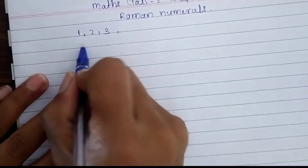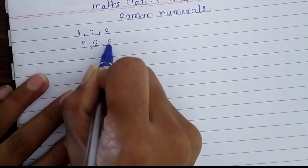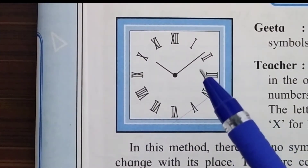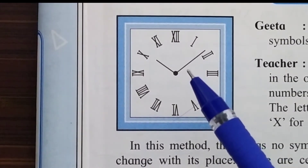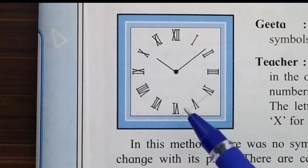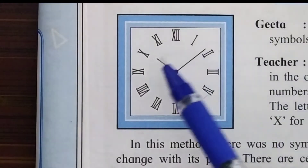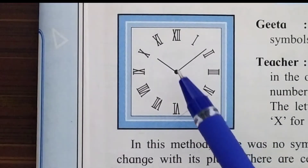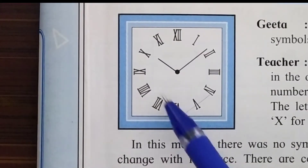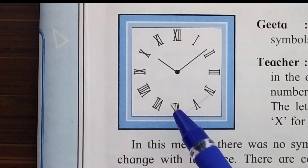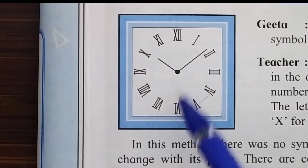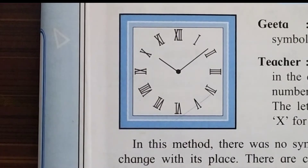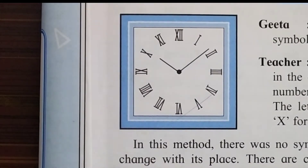But look at this clock — it doesn't have numbers like a normal clock. It has symbols. The symbols are made from some alphabets in English. You can see here I, V, X, double I, triple I. These symbols are Roman numerals. Long ago in old times in Europe these symbols were used to represent numbers.